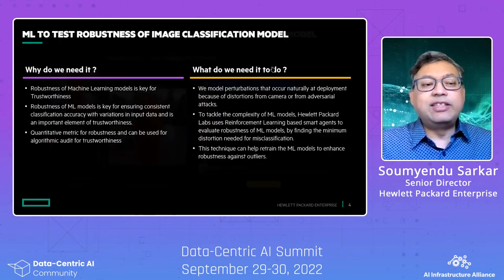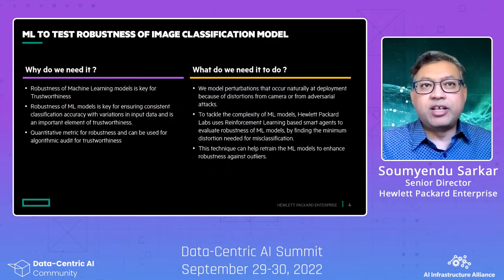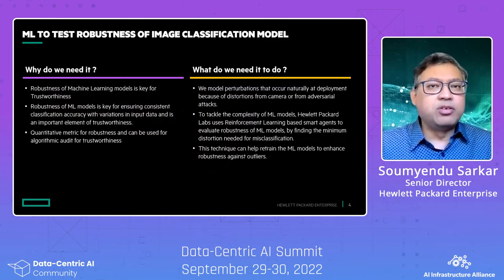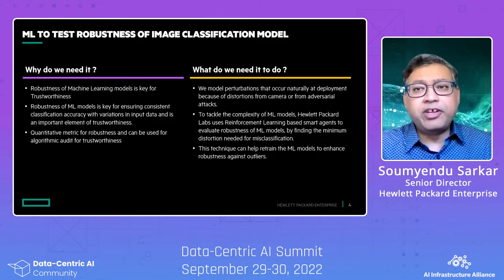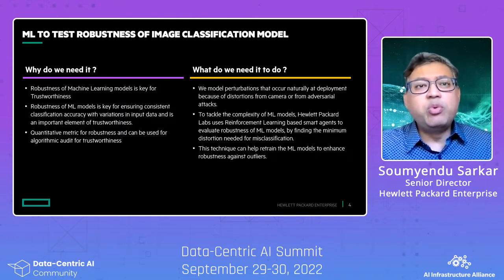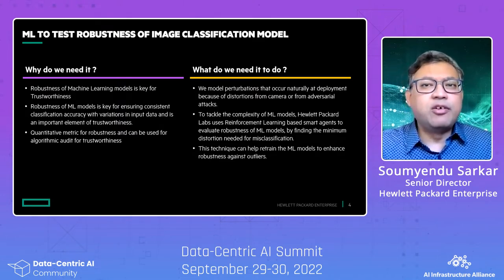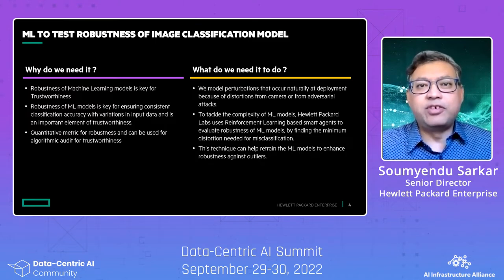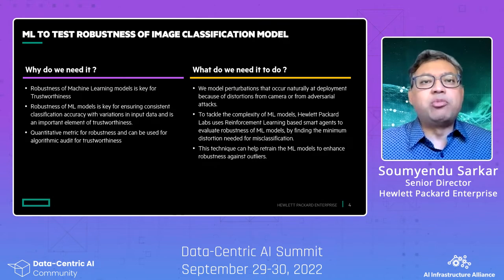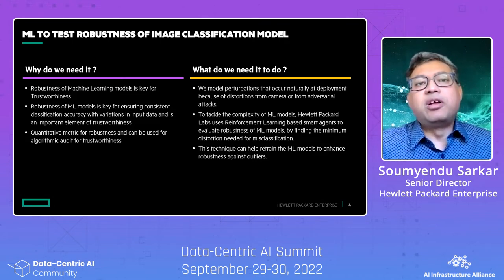This is one of the main problems that we are addressing. Robustness for the machine learning model is key for ensuring consistent classification accuracy with variations in input data, and is an important element of trustworthiness. We wanted the agent to work with black box models, which is of advantage as we do not need access to the model code, and it also requires much less specialized data scientists' efforts so that we can democratize measurement of robustness.